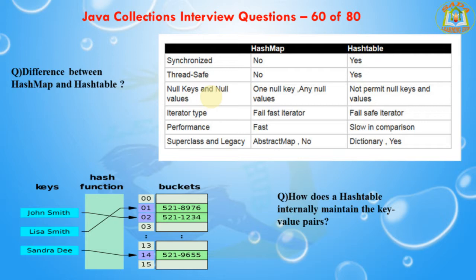The next question is how does a TreeMap internally maintain key-value pairs. TreeMap actually implements the SortedMap interface, which extends the Map interface. In TreeMap, data will be sorted in ascending order of keys according to the natural order for the key classes, or by a Comparator provided at creation time. TreeMap is based on the Red-Black tree data structure.